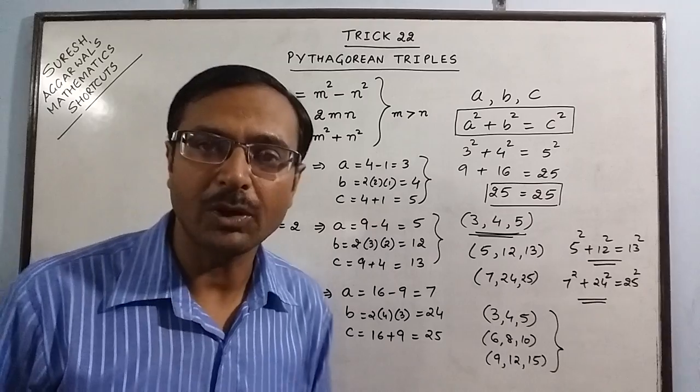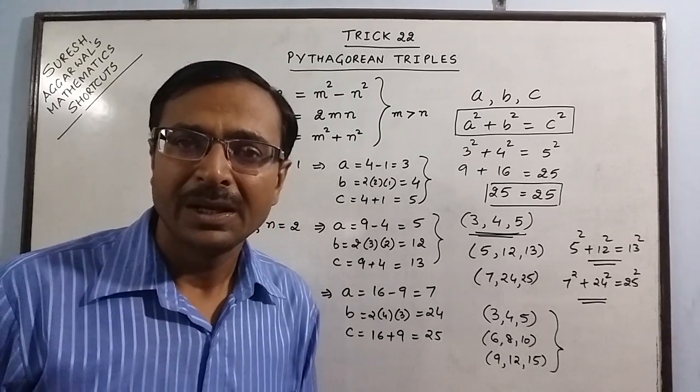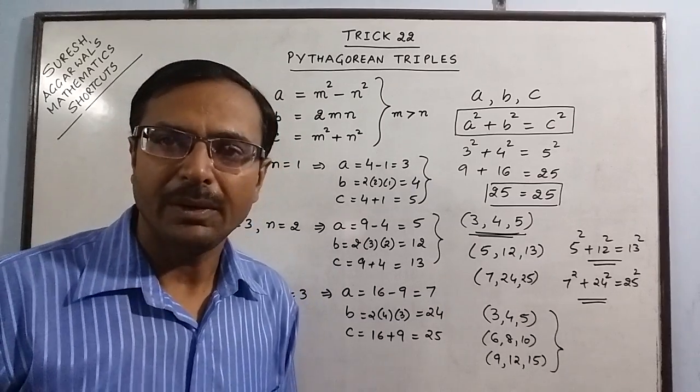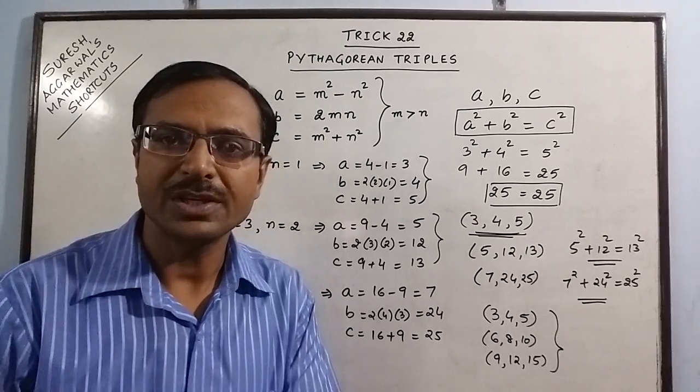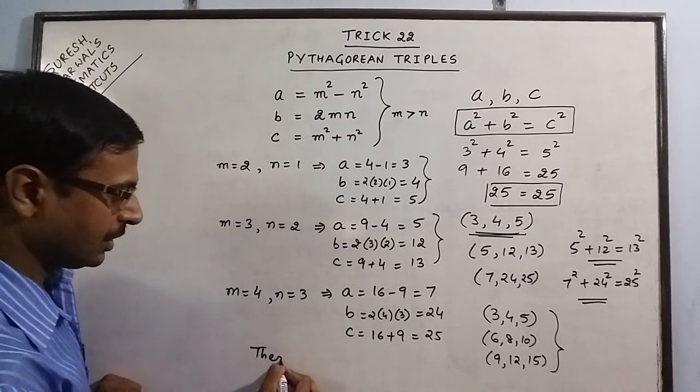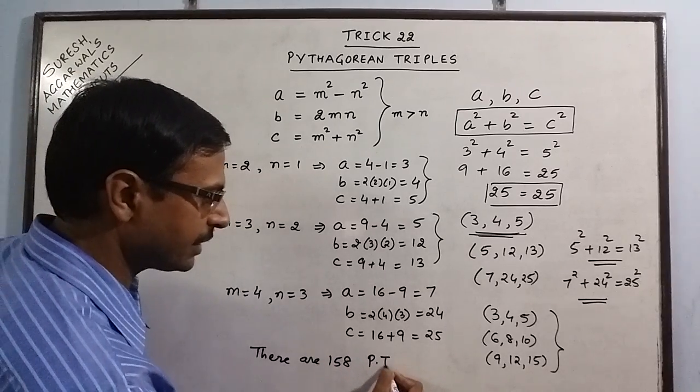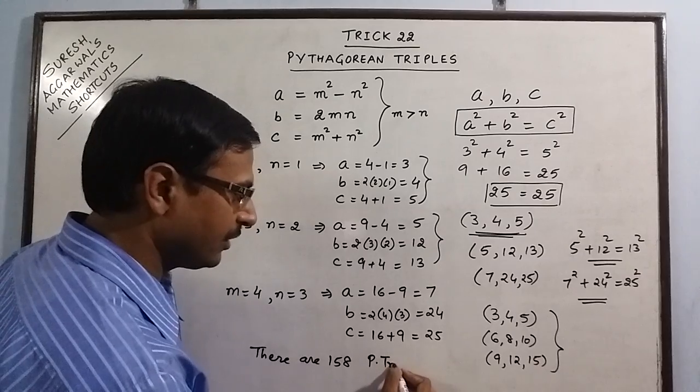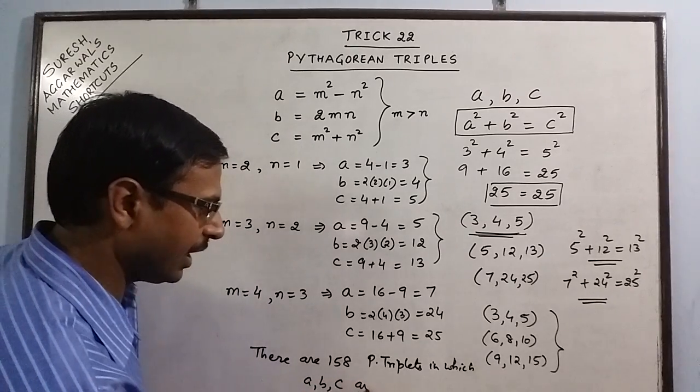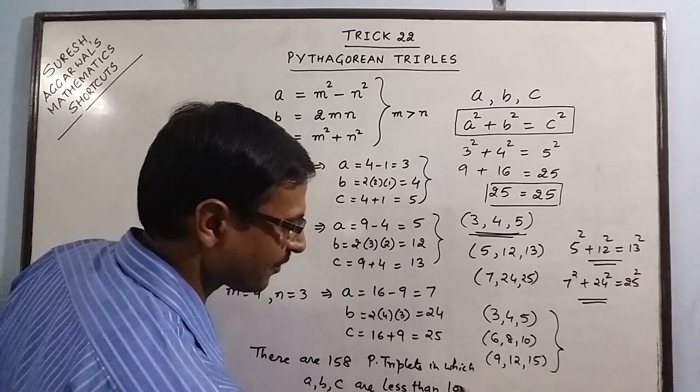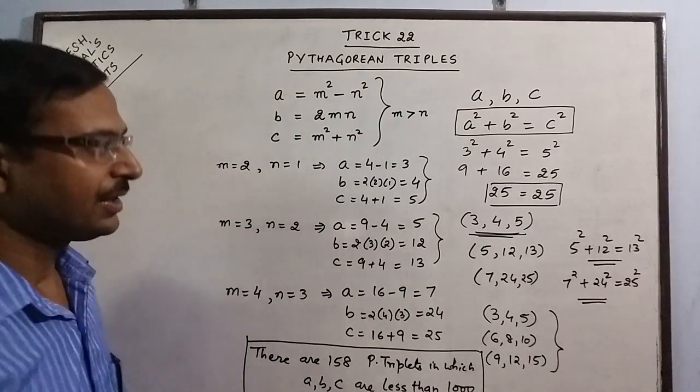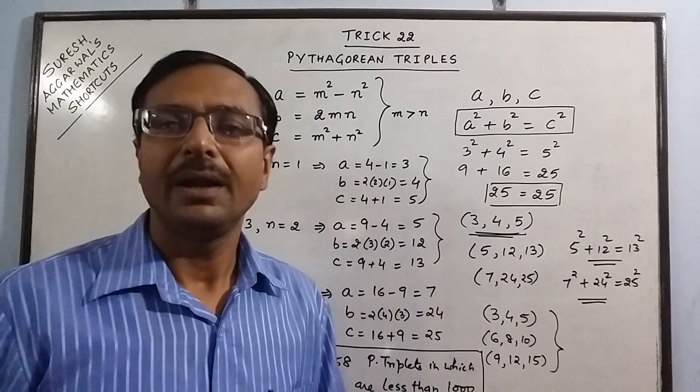Likewise, you have infinite number of Pythagorean triplets. But, most of the Pythagorean triplets which are used up to class 10th, say we don't use very large Pythagorean triplets. So, just to increase your knowledge, I can tell you that there are 158 Pythagorean triplets in which a, b and c are less than 1000. You have approximately 158 Pythagorean triplets in which a, b and c are less than 1000.